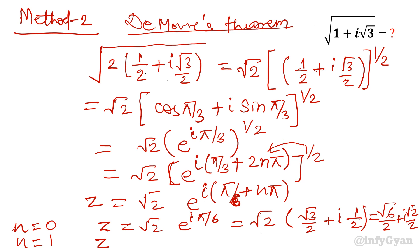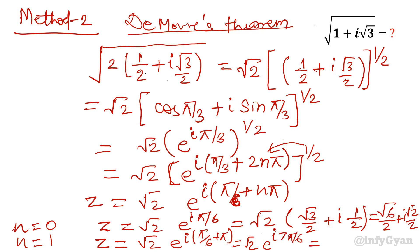For n equals 1: z equals root 2 times e raised to the power i times pi over 6 plus pi, which equals root 2 times e raised to i times 7 pi over 6. This is in the third quadrant, where both cos and sin are negative. So the answer is root 2 times negative root 3 over 2 minus iota times 1 over 2, giving minus root 6 over 2 minus iota root 2 over 2. Both answers match.